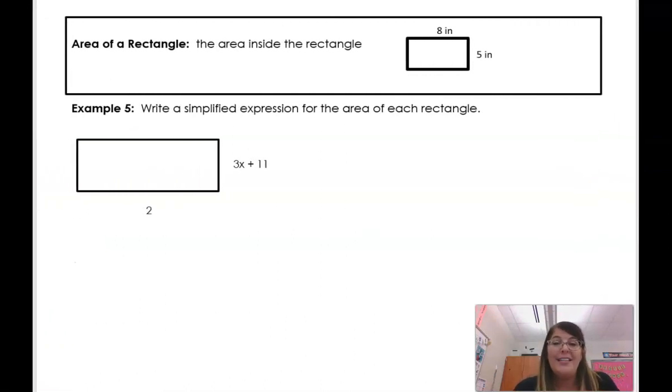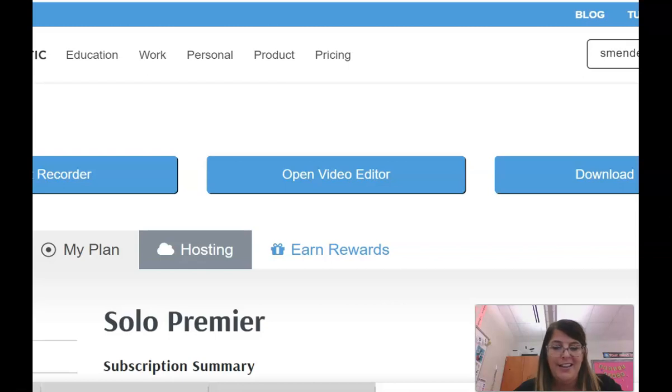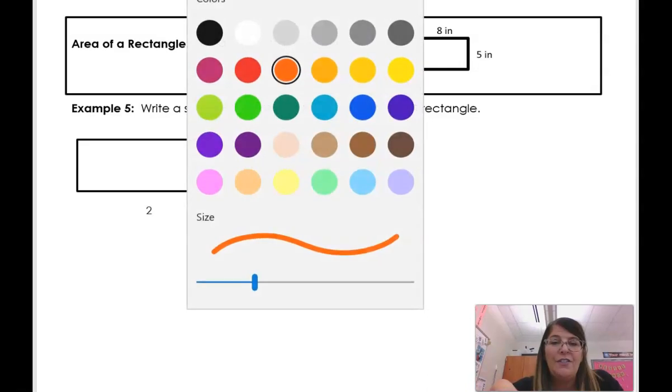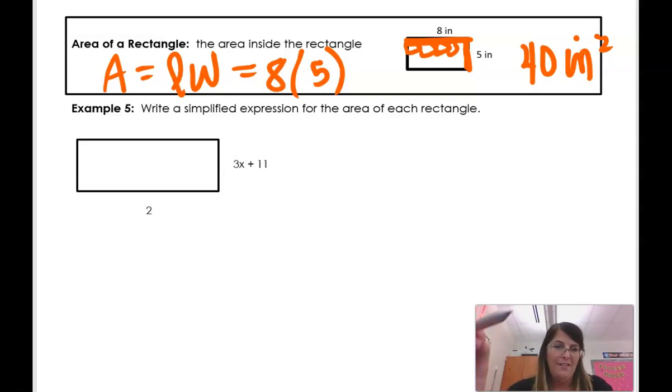Okay, what I have going on here now in this last example is finding the area. So the area is just finding how many little tiny squares there are inside there. So the area of a rectangle is just the length times the width. So it is 8 times 5. Here's the length and here's the width. That is going to give me 40 inches squared. So if I could draw little tiny squares here, there would be 40 of them. If I had 8 by 5. Now we're going to do the same thing, but we're going to find the area of this big rectangle.